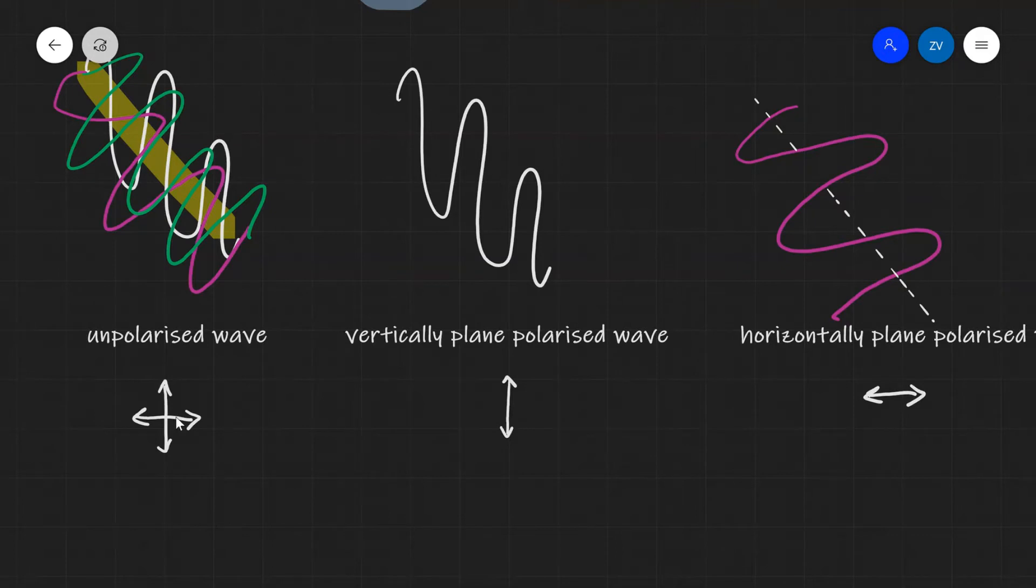If the particles or the EM waves are polarized in the vertical plane, we often denote this simply with an arrow moving up and down, like so.